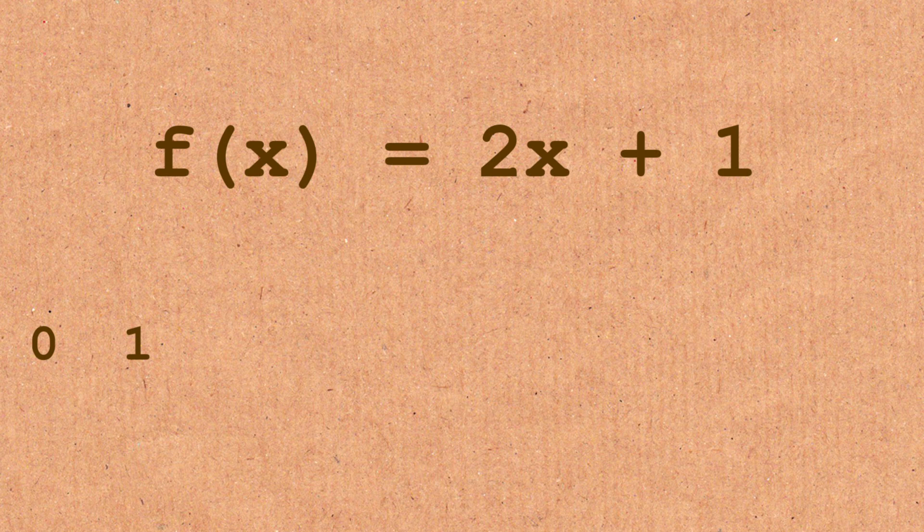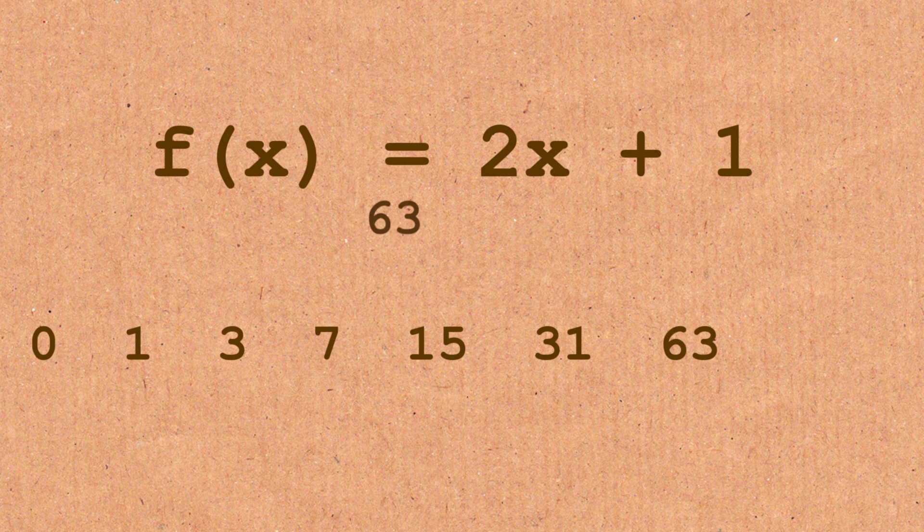So when we plug 1 into the function, we get 2 plus 1, which is 3. When we plug 3 into the function, we get 6 plus 1, which is 7. So you look at the last number. So 15, 31. So maybe I'll do two more just for a demonstration here. So 62 plus 1, that's 63. And 126 plus 1, that's 127.